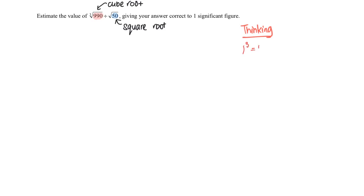1 cubed is 1. 2 cubed is 2 times 2 times 2, which is 8. 3 cubed is 3 times 3 times 3, which is 27.